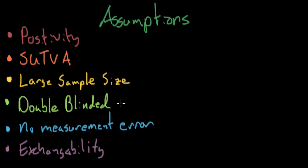Double-blindedness. This is probably something you've heard before, a double-blinded study, and I'll go ahead and explain why this is important. The no-measurement-error assumption. This basically assumes that you're measuring the things in a correct way. And the exchangeability assumption.